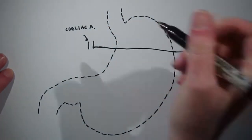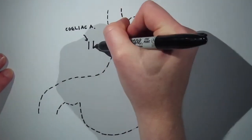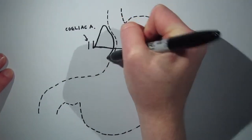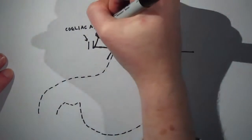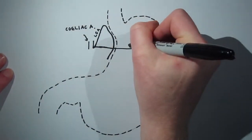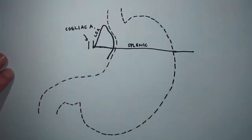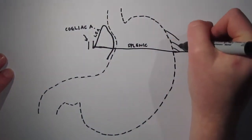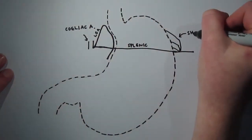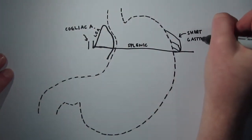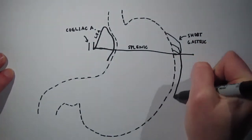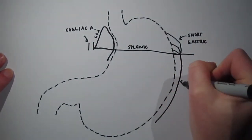The left gastric artery is a branch of the celiac trunk and supplies the lesser curvature superiorly. The short gastric arteries, branches of the splenic artery, supply the fundus and the upper body.